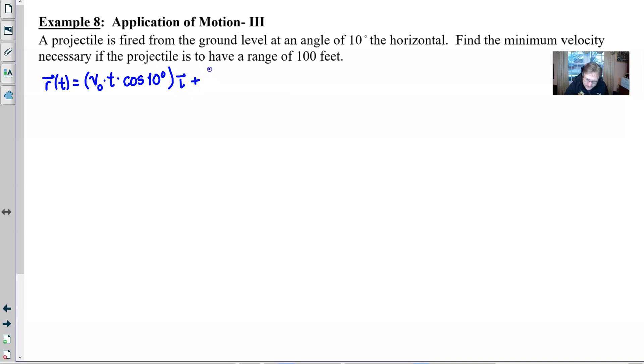And then for the j vector we'll start with our negative 16t squared. We are dealing with feet here and again we don't know the v₀ so we're going to multiply v₀ by t by the sine of 10 degrees. I don't believe that we have an initial height since we are at ground level and so we can close out that vertical component.